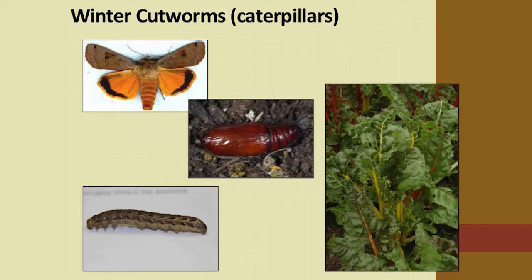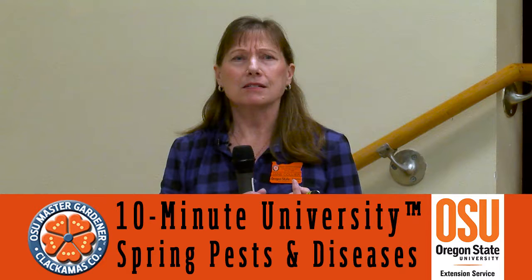Winter cutworms — it's not a worm, it's actually a caterpillar, also called the greater yellow underwing. If your herbaceous plants are just coming up or you've planted seeds in your vegetable garden and you notice chew marks on the leaves, or chewing right down at the soil level, that's probably done by a cutworm. Unfortunately, this cutworm eats a lot and goes in groups, so they can devastate your plants in a very short amount of time.